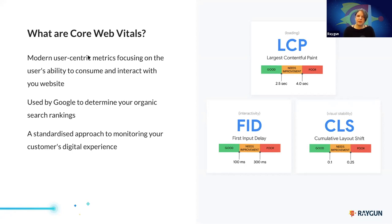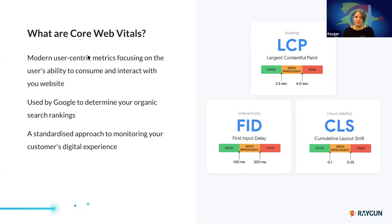The third metric, Cumulative Layout Shift, is actually a new one — so new that you can only natively track it in Chromium browsers at the moment. It's not a time-based metric but a score. CLS measures how much a page jumps around while it's loading. This is probably one we can all really relate to, especially on mobile. It's so annoying when you open a web page, start reading something, or try to click a button and it jumps down because a picture or ad pops up and you click the wrong thing.